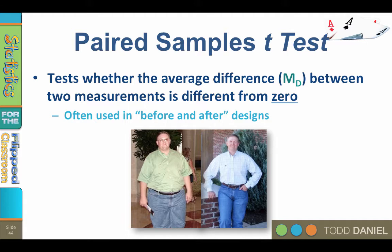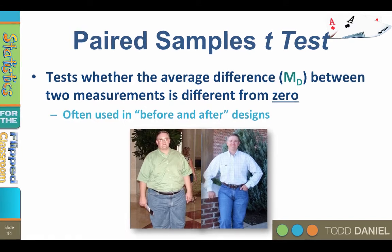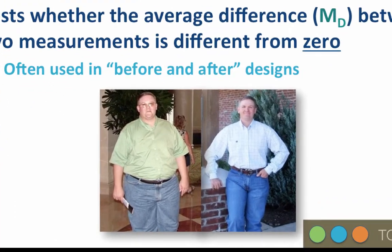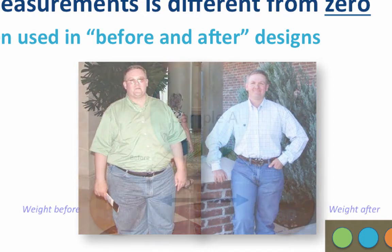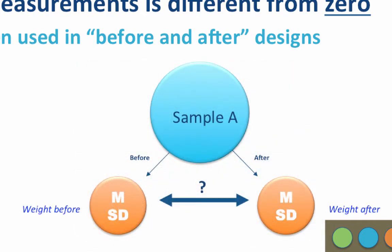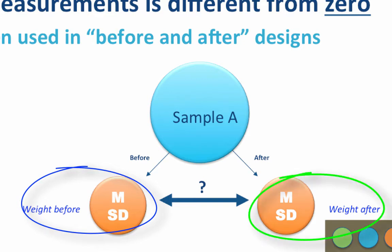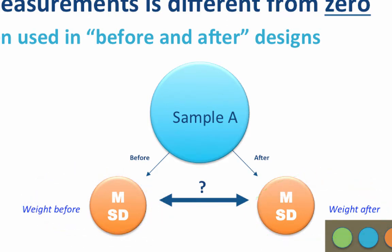It is often used in before and after designs where the same individuals are measured both before and after a treatment to see if change occurred over time. For example, a television show starts with a group of individuals who are very overweight, and over time, through diet and exercise, they lose weight. The same sample is measured before and after — their before scores have a mean and standard deviation, and their after scores have a mean and standard deviation. Is their ending weight significantly different from their beginning weight?